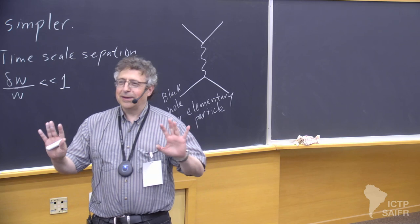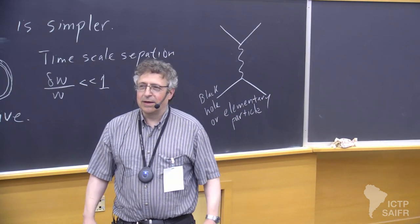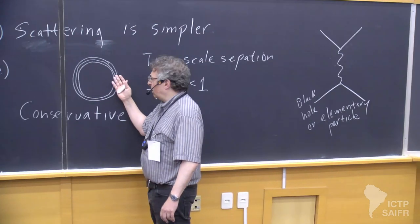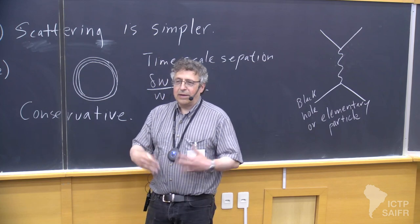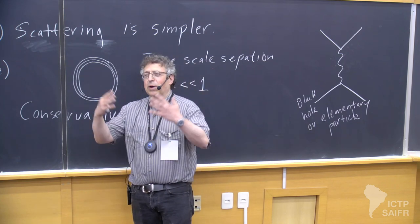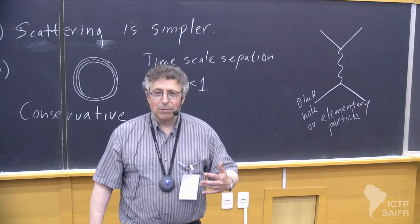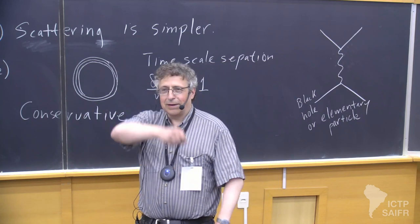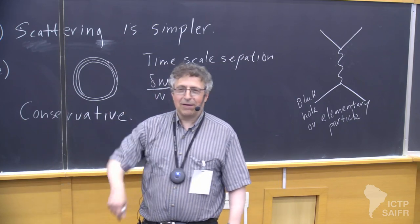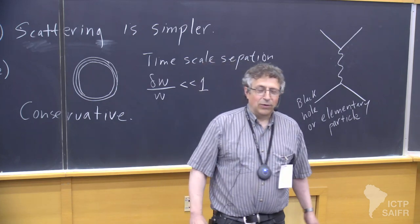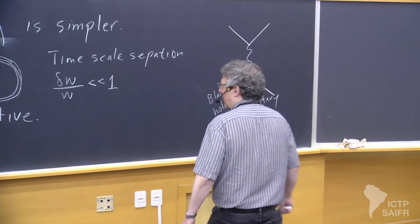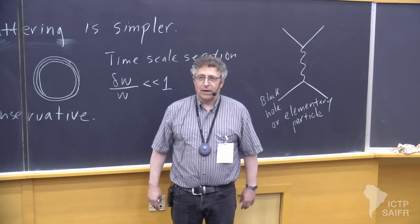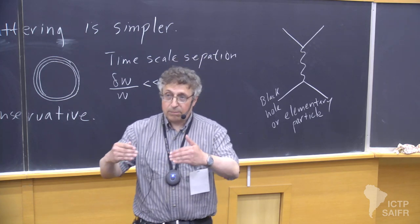When you get to sufficiently high orders of perturbation theory there's the tail effect and non-locality, and things get a bit more complicated. But at low orders the scattering problem and the orbital problem are identical — just as when you were an undergraduate learning Newtonian mechanics, solving the scattering problem simultaneously solved the orbital problem.